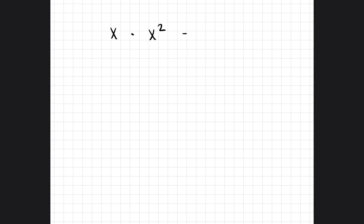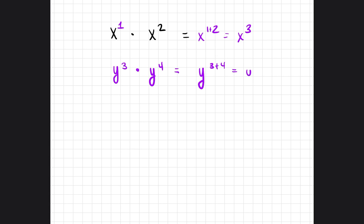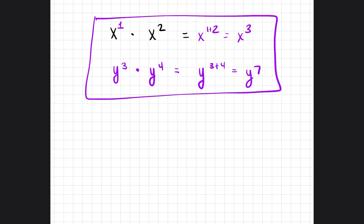When multiplying variables, you add the exponents. For example: x times x squared — x has an invisible exponent of 1, so we do x to the 1 plus 2, which equals x to the third power. Another example: y to the third power times y to the fourth power — because we're multiplying, we add the exponents: 3 plus 4 gives us y to the seventh power.